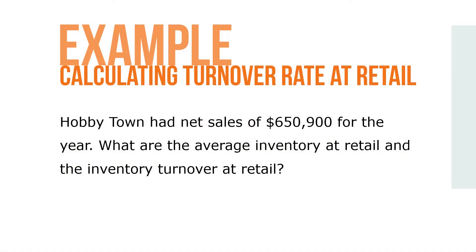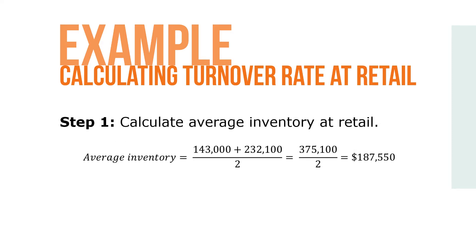Here's an example. Hobby Town had net sales of $650,900 for the year. If the beginning inventory at retail was $143,000 and the ending inventory at retail was $232,100, what is the average inventory at retail and the inventory turnover at retail rounded to the nearest tenth? Step 1: Calculate the average inventory at retail, which is equal to $143,000 plus $232,100 divided by 2, which equals $375,100 divided by 2, or an average inventory of $187,550.